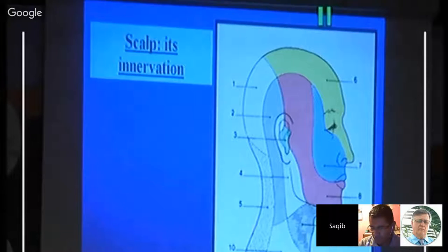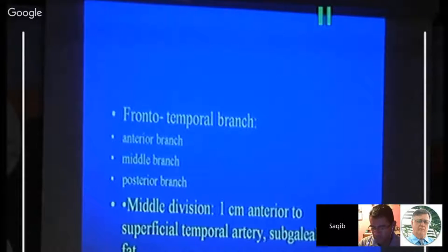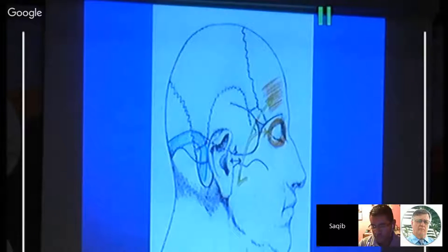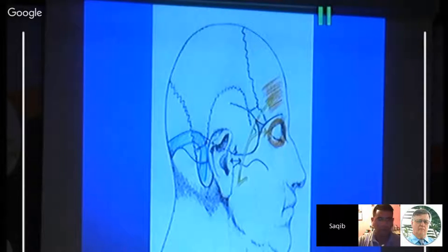These are the basic dermatomes to remember. The frontal temporal branch has three main branches: anterior, middle, and posterior. The middle division is one centimeter anterior to the superficial temporal artery, lying in the subgaleal fat pad. The plane between the superficial and deep layers of the superficial temporal fascia protects this branch from damage. It is usually four centimeters posterior to the orbit, so whenever you encounter this fat pad, try to go below it.